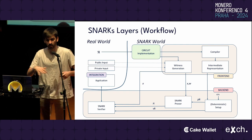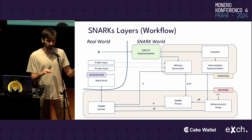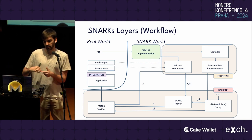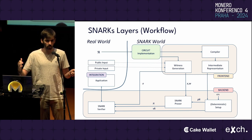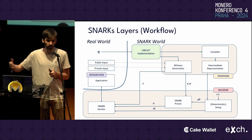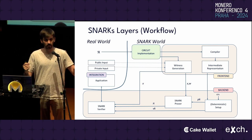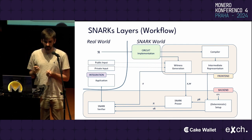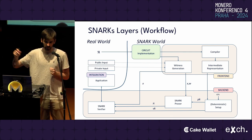Finally, we have the application layer, which is basically the layer where we are interacting with the SNARK. You can imagine that layer being a smart contract that calls an on-chain verifier to see if a proof is correct or not. Another example for the integration layer could be some code that calls the prover.